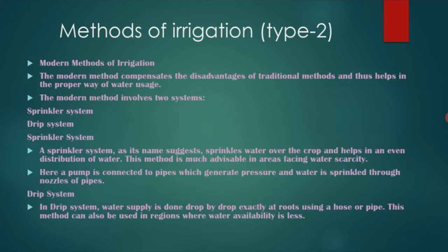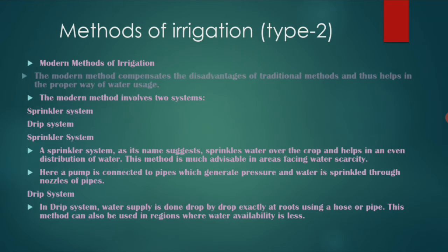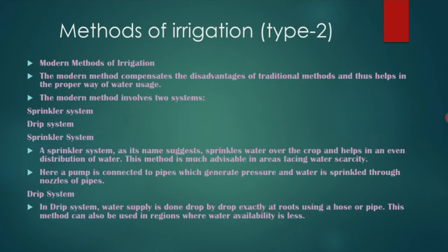The modern method of irrigation compensates for the disadvantages of traditional methods and thus helps in the proper usage of water. Some modern methods involve two systems: the sprinkler system and drip irrigation. In the sprinkler system, as the name suggests, water is sprinkled all over the crop like rain.